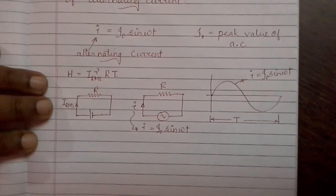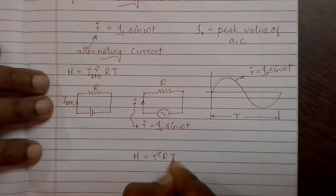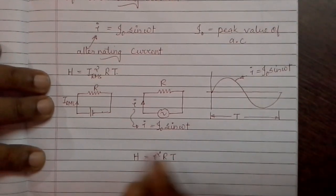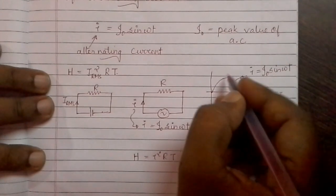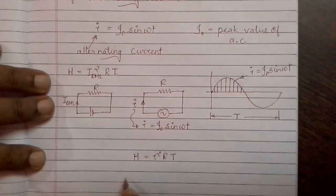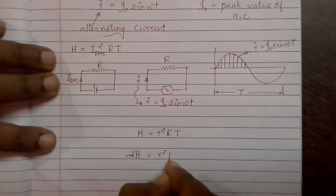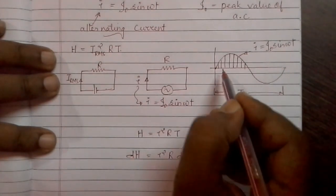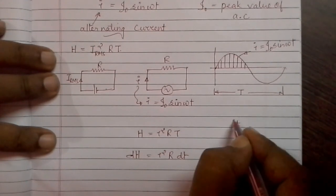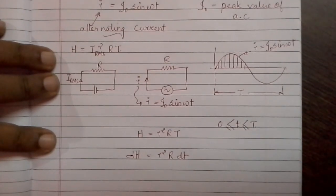For alternating current, we can write the heat dH equals I₀ sin(ωt) squared into R into dt, where the value of t starts from 0 and ends at T. That means t ranges from 0 to capital T, so t is greater than or equal to 0 and less than or equal to capital T.